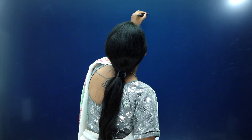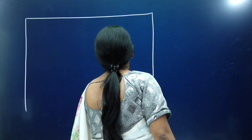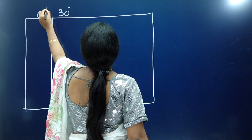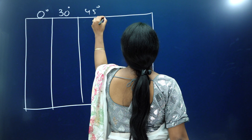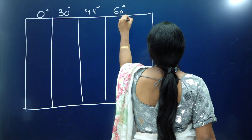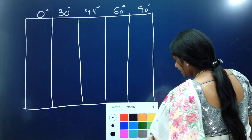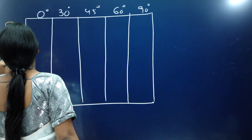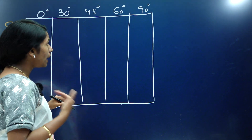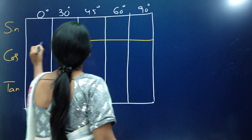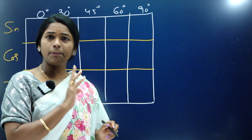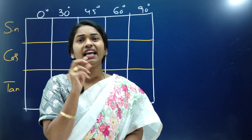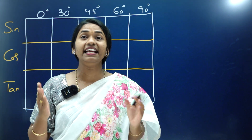First, make one box — one column each for 0°, 30°, 45°, 60°, and 90°. Write sin, cos, and tan as rows. Now, for sin values: Step 1 — write 0, 1, 2, 3, 4. Step 2 — divide each by 4: you get 0, 1/4, 2/4 = 1/2, 3/4, and 4/4 = 1. Step 3 — take the square root of each: √0 = 0, √(1/4) = 1/2, √(1/2) = 1/√2, √(3/4) = √3/2, √1 = 1. Your sine values are complete. Even as a NEET aspirant, if you spend 2 minutes on this table, you will have no discomfort using angles in any chapter.